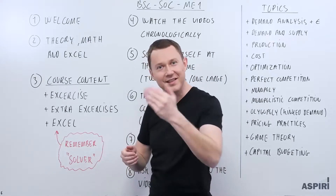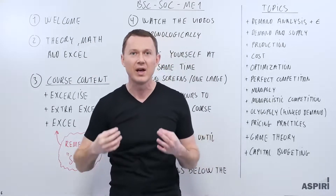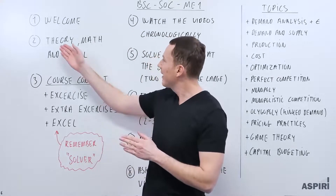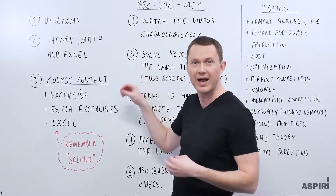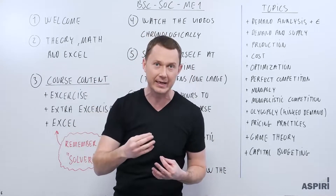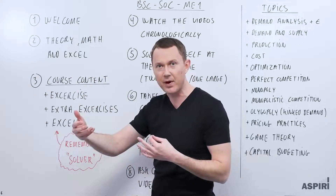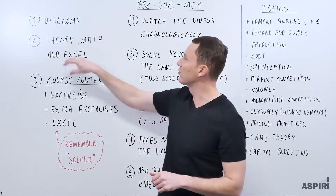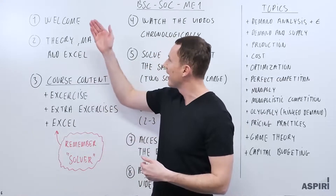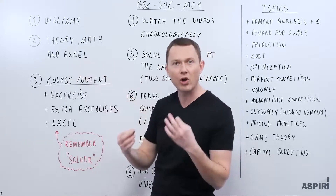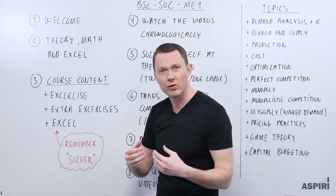Welcome to the course. Theory, Math, and Excel — these are three main competences you need to get a good grade in Managerial Economics, and we'll go through them all during the course. For example, if I do an equation on the board, I'm also going to tell you about the theory behind it. And if I go through an Excel exercise, I'm also explaining the math and theory behind it. My ambition is that you understand all topics from a theory angle, a math and equation angle, and that you can solve and illustrate them in Excel.